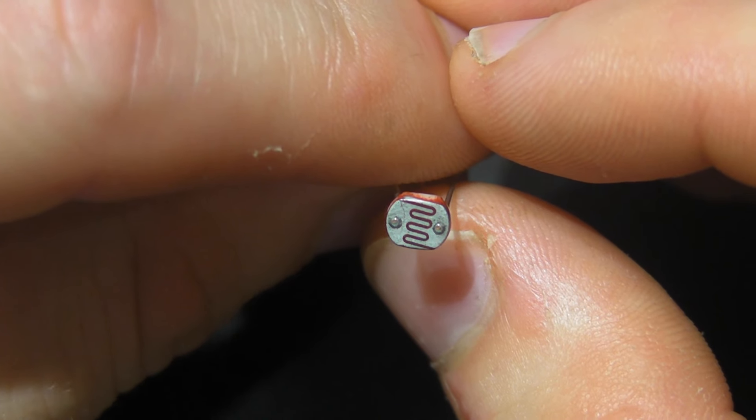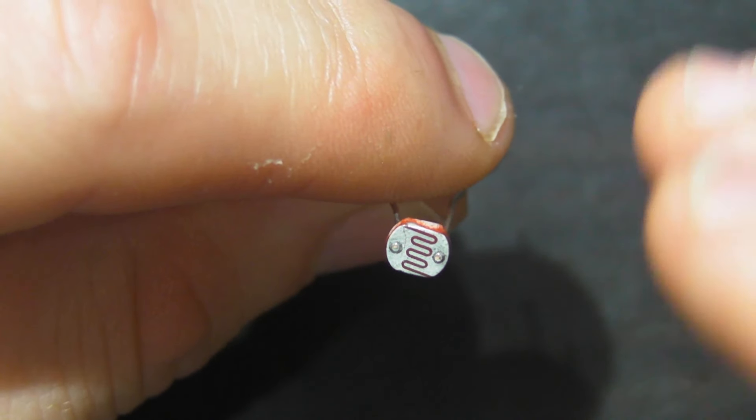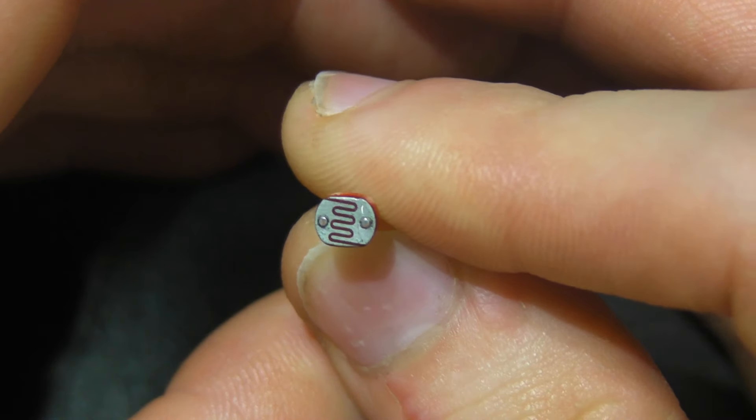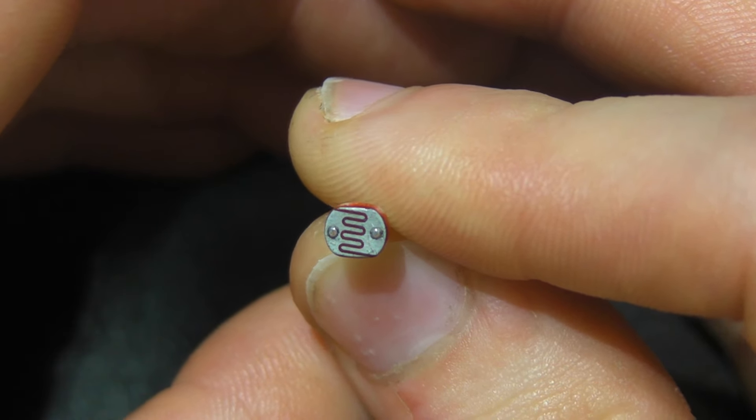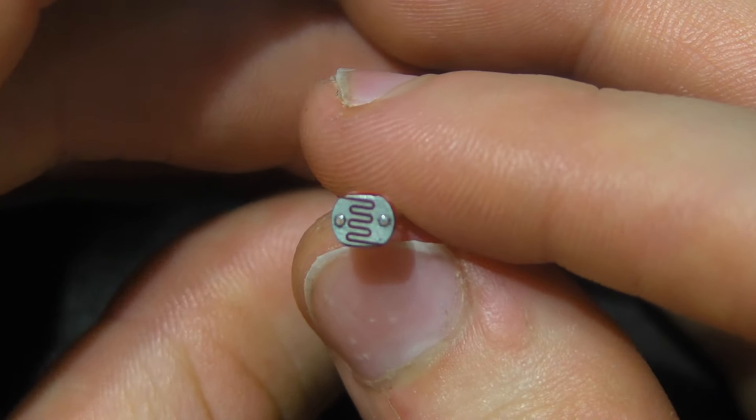And what that means is that this is a resistor that changes its resistance depending on the amount of light that hits it. They are made from a semiconductor material, so that when light hits the semiconductor material, it becomes more conductive and therefore has less resistance.